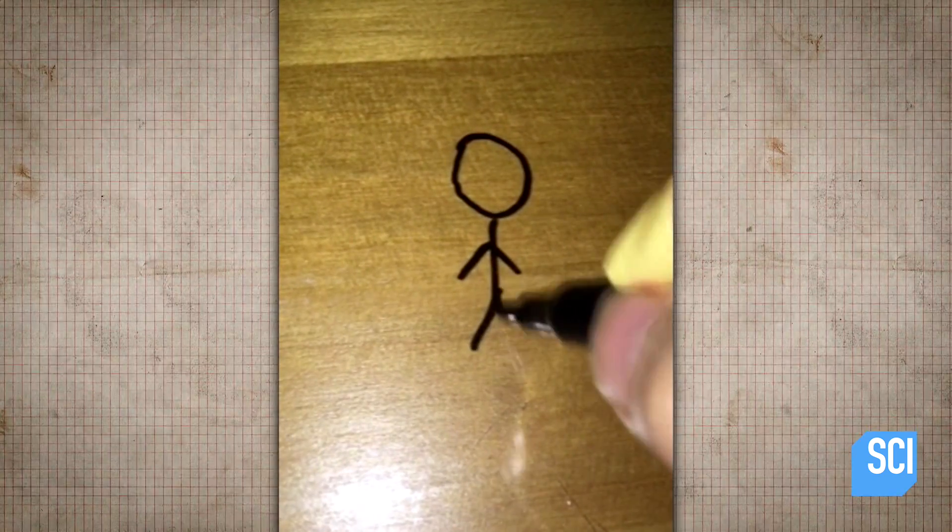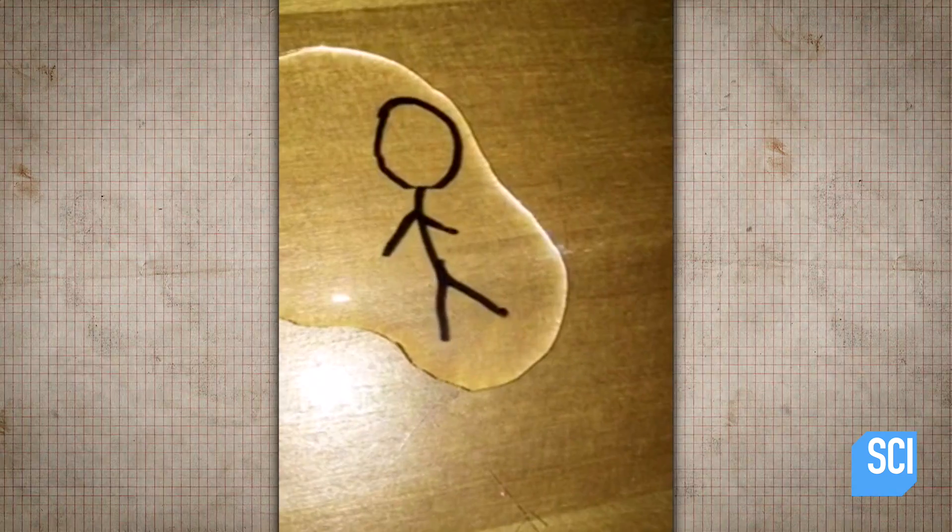For this trick to work, the ink must be put onto a smooth, non-porous surface. Because there are no pores for the ink to sink down into, it sits on the top and can float up really easily.